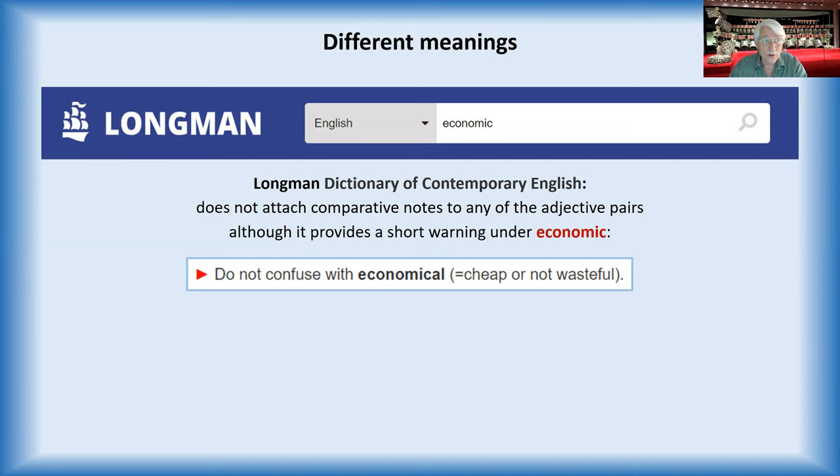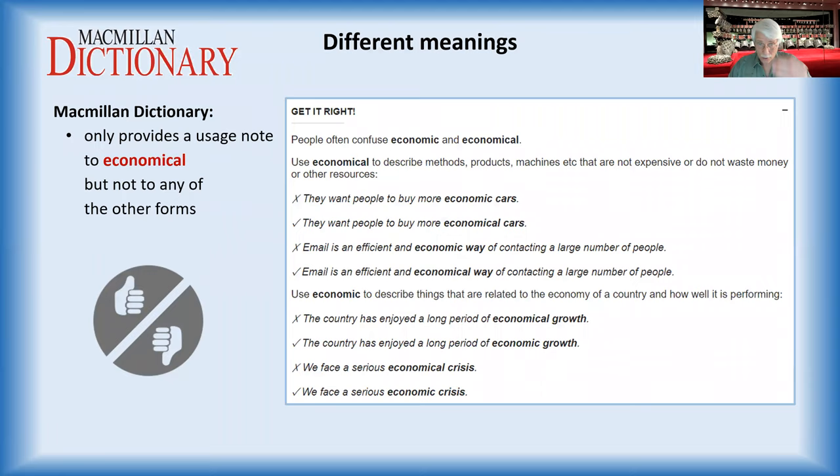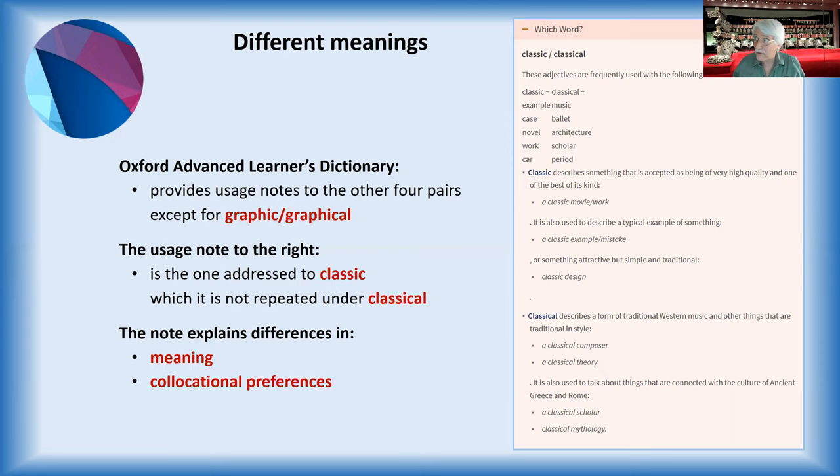Here's Macmillan. It's a long one that gave us a lot of correct combinations, but also incorrect ones. And finally, we have the Oxford Learner's Dictionary, which is actually treating all of the four pairs except for graphic and graphical. Here you see the one with classical and classic, where they both have explained the different meanings, but also the collocational preferences.